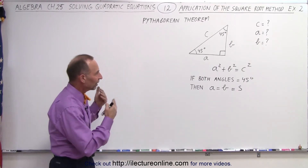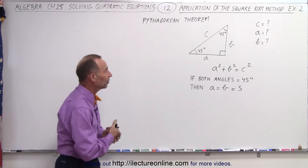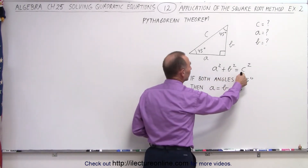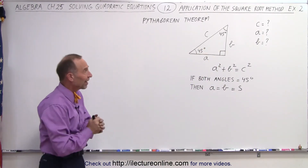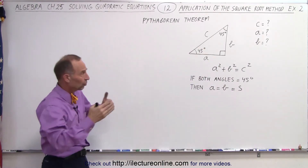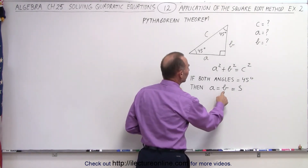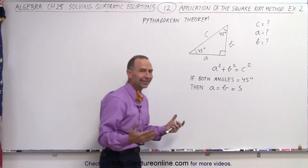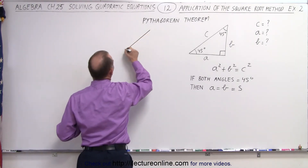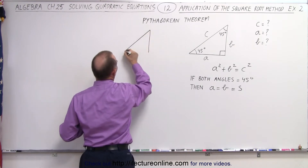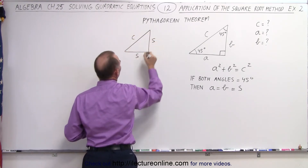In this case, we still have a right triangle. We can still use the Pythagorean theorem and say that A squared plus B squared equals C squared. But in this case, both of the other two angles are 45 degree angles. If that's the case, there's perfect symmetry, and we can say that the length of A must equal the length of B. So let's call it S, the side. We end up with a triangle where this is the hypotenuse C, this is S, and this is S.